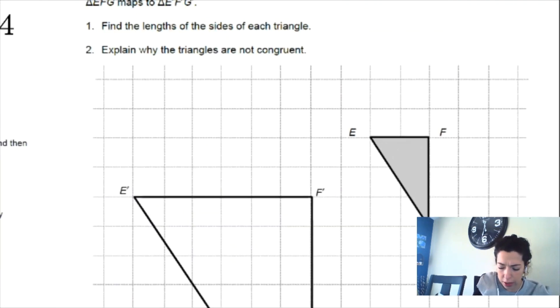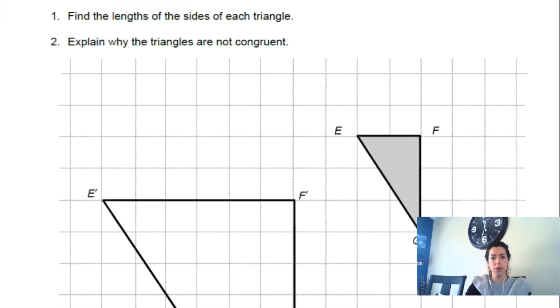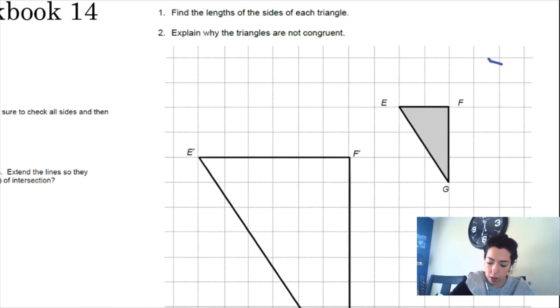The first thing it says is find the lengths of the sides of each triangle. This is a right triangle, so we could use the Pythagorean theorem to find EG. I'm not going to do that, I'm just going to find the horizontal and vertical ones. If I look at segment EF, what is the length of EF? Two units. What is the length of E prime F prime? Count 1, 2, 3, 4, 5, 6. Six units.